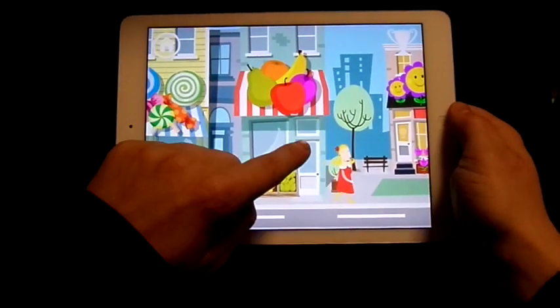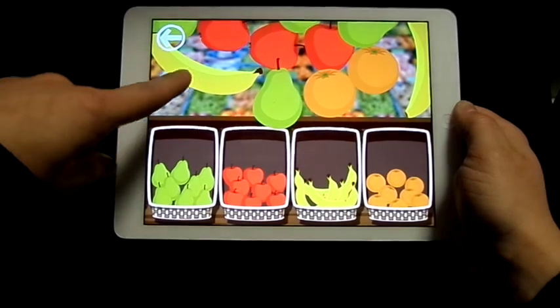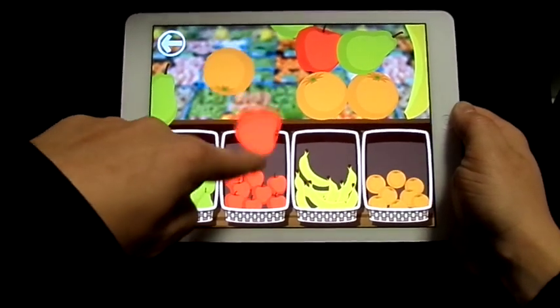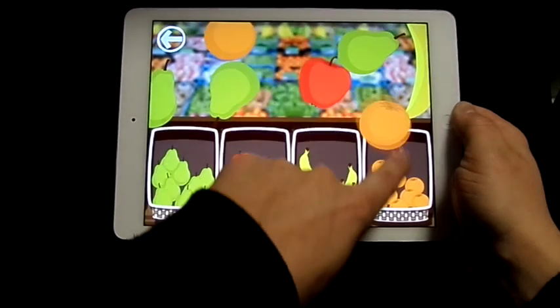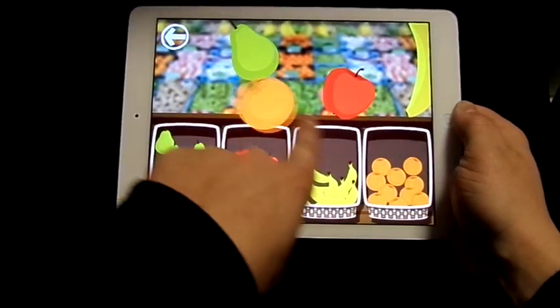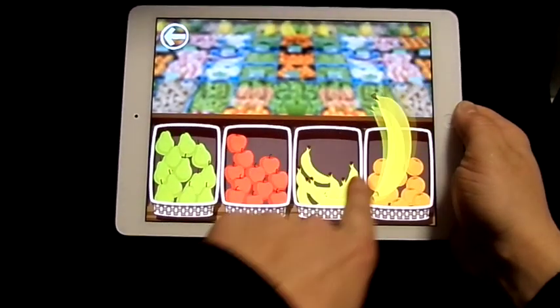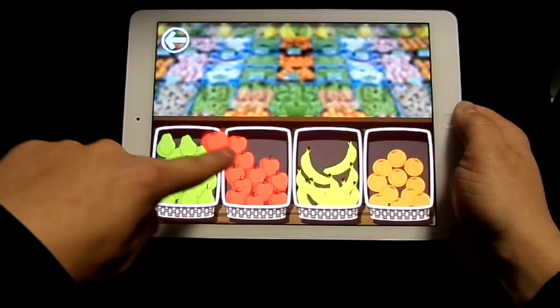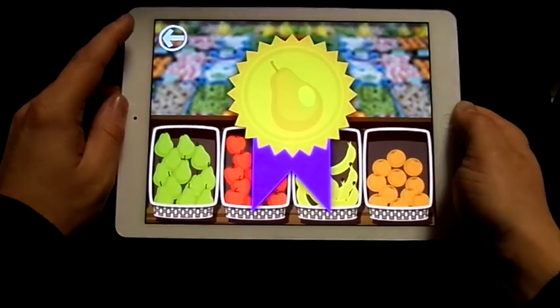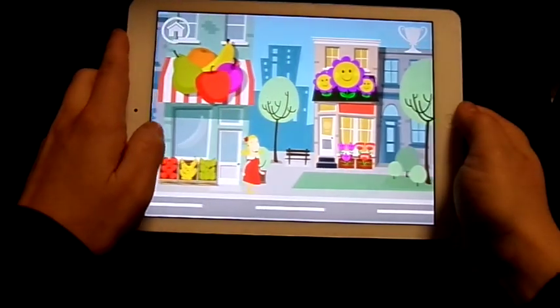Did we do that one? No, I don't think we did. So this is the fruit. You've basically got to put the fruit in the right baskets. Banana. Oh, look, the wrapper up there. And that is it.